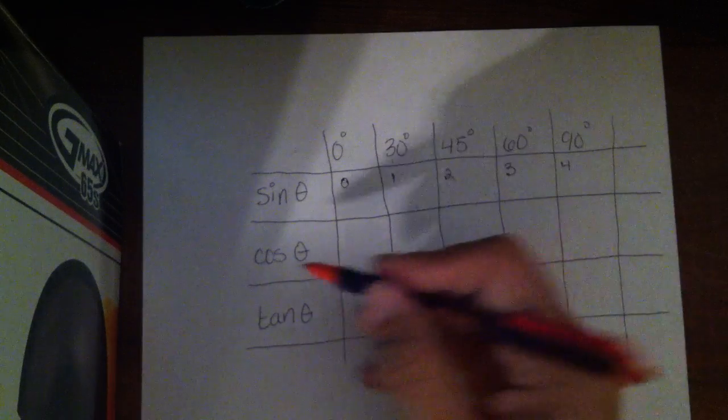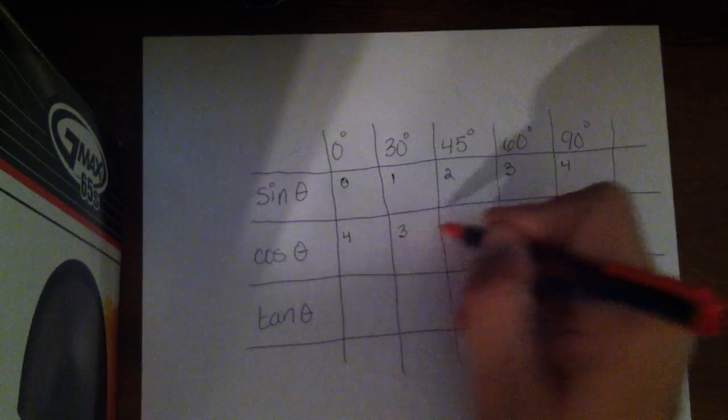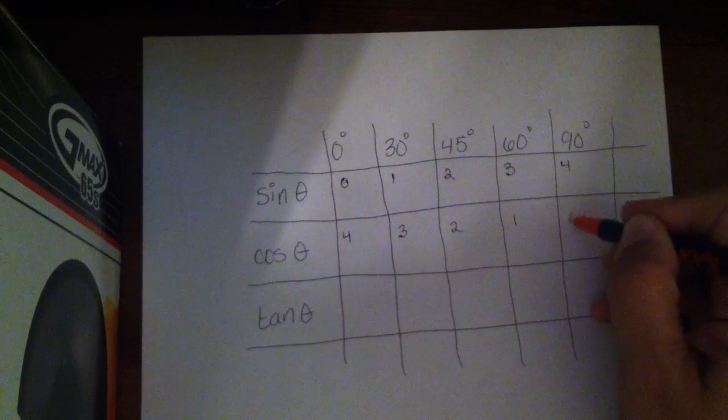And then in the cosine row, I'm going to do that backwards. I'm going to say 4, 3, 2, 1, 0.